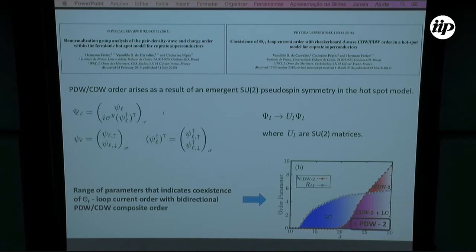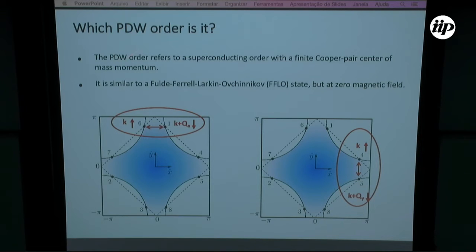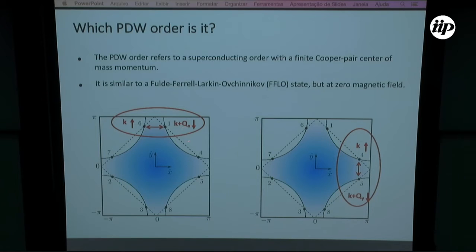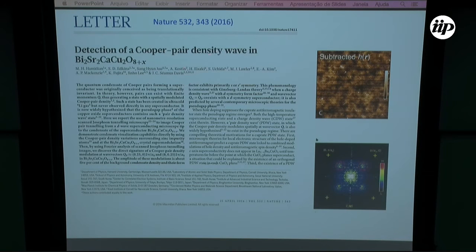Due to this emergent SU2 pseudo-spin symmetry, a checkerboard pair density wave should also be visible in these materials. The pair density wave order refers to a superconducting order with a finite Cooper pair center-of-mass momentum — pairs formed, for instance, between k up-spin and k plus Q_x down-spin. This is a checkerboard pair density wave, and it was experimentally confirmed by the group of Séamus Davis and collaborators, who detected this Cooper pair density wave in Bi-2212.